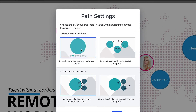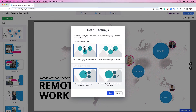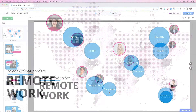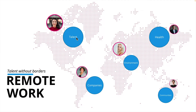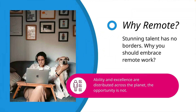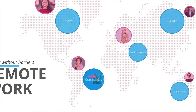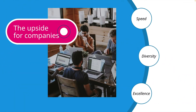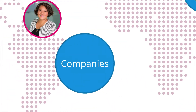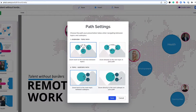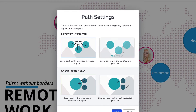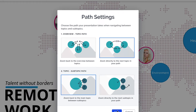First, set the overview topic level. You can set a path where you zoom back to the overview between each topic, which is great when you want to recap before diving into the next part. Or choose to go from one topic to the next and keep the presentation moving.